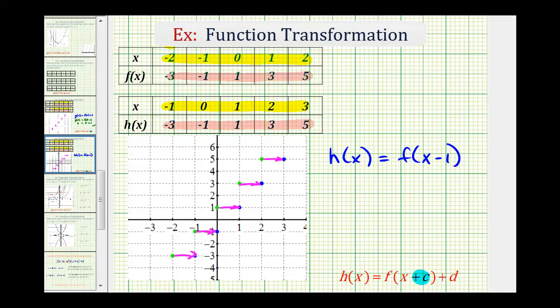And again, let's go ahead and test this. Let's select h of two. Well, h of two must be equal to f of two minus one is one. Notice h of two is three, and f of one is equal to three as well. So this rule checks also.